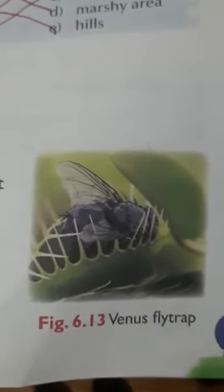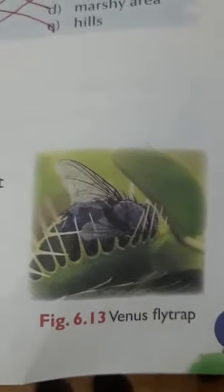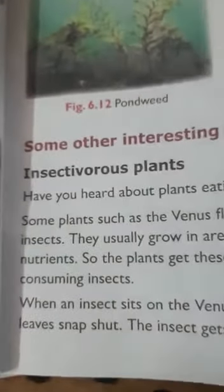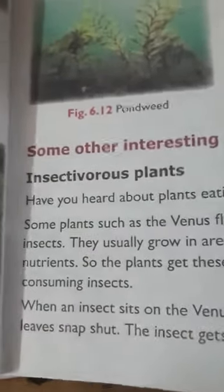Similarly, in the pitcher plant, the leaves are modified into a pitcher or jug-like structure. When an insect enters this jug-shaped structure, its lid closes and traps the insect, which is then absorbed. This is how these plants fulfill the nutrient needs that they lack from the soil in which they grow.